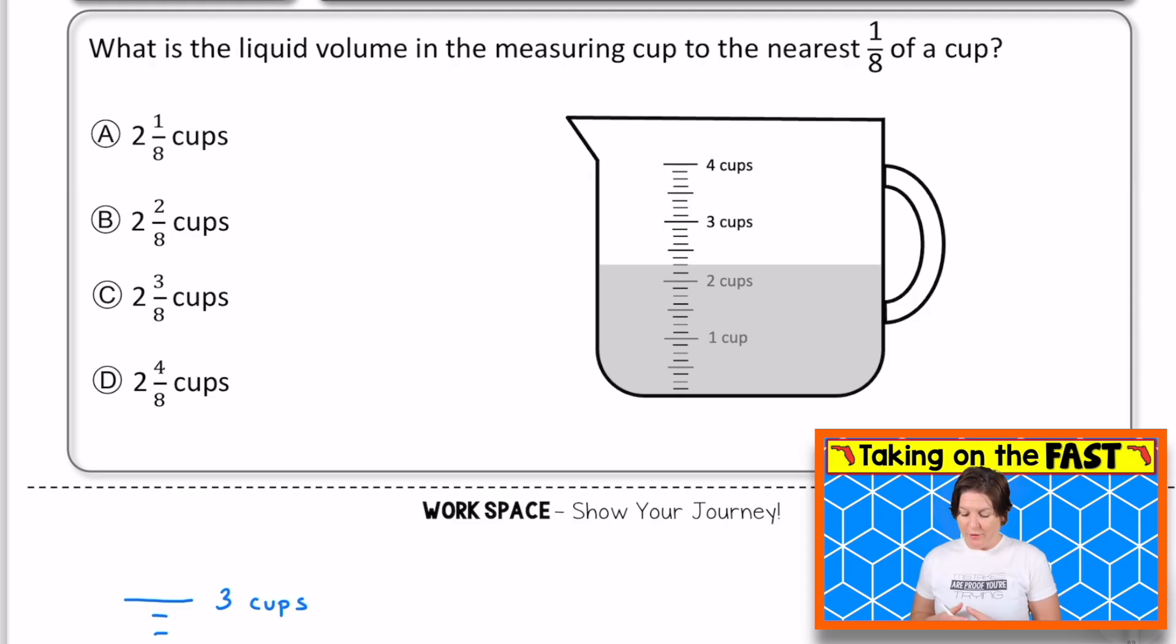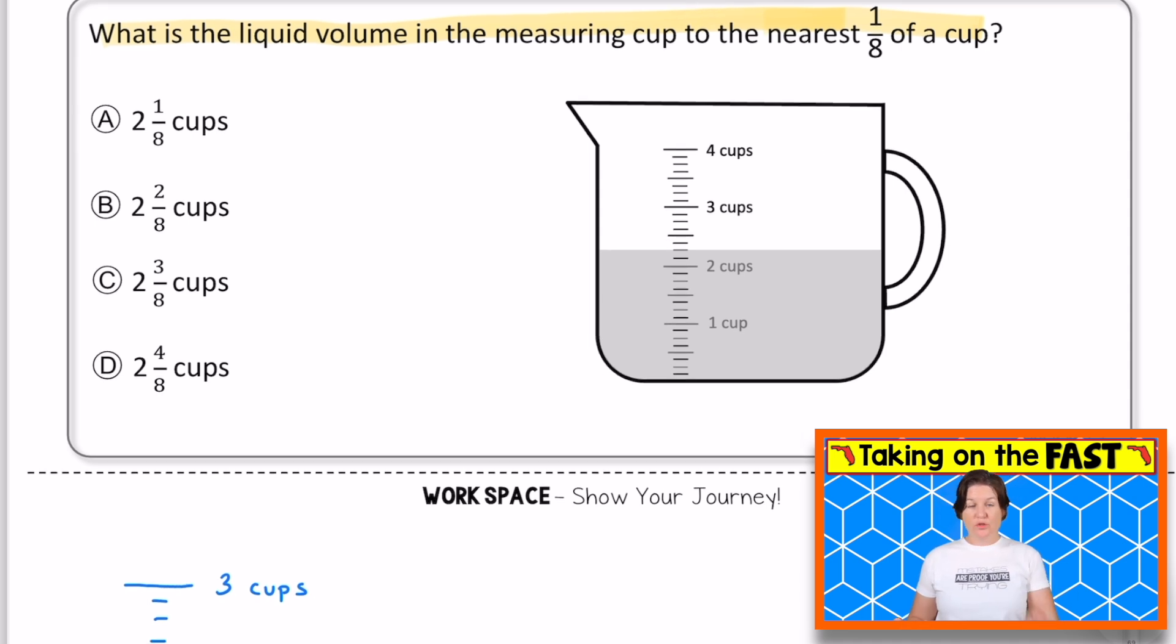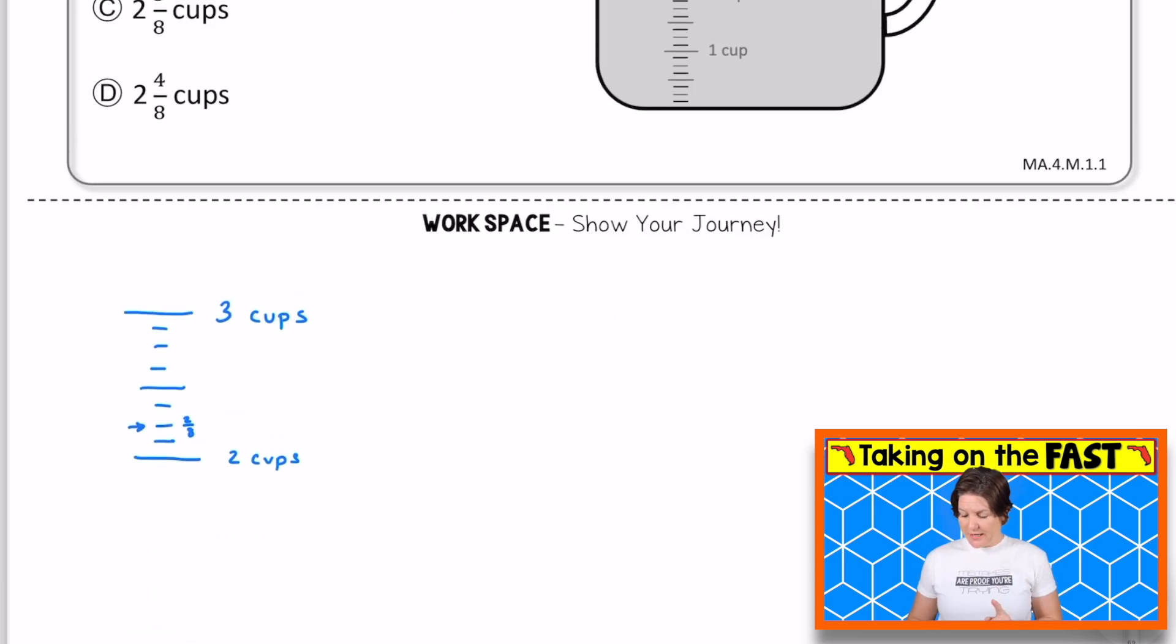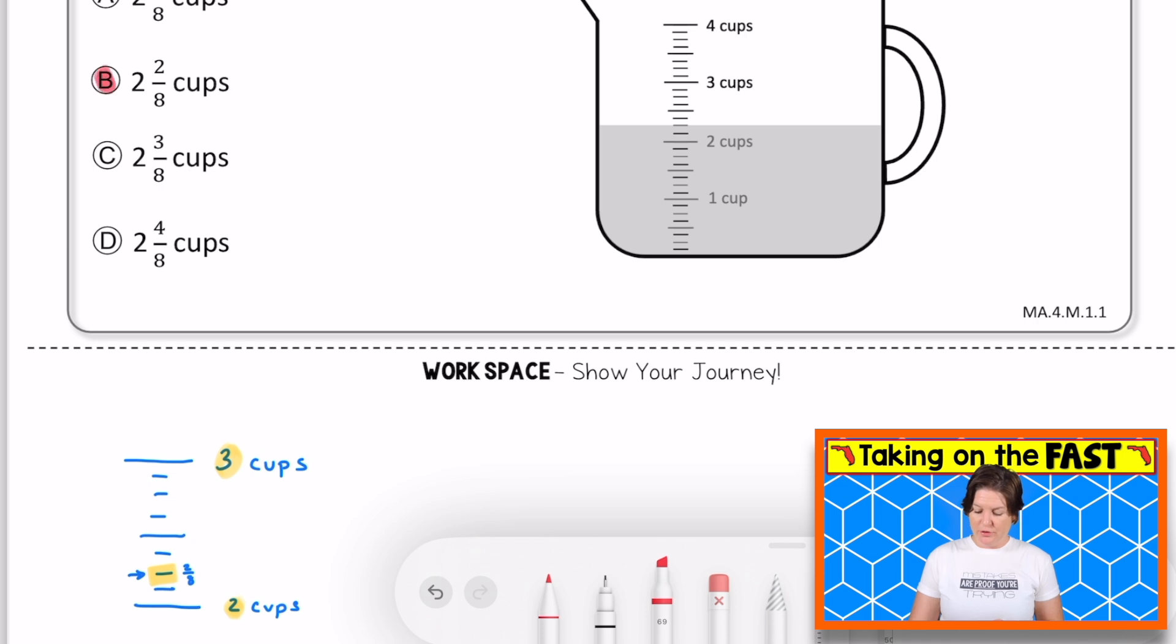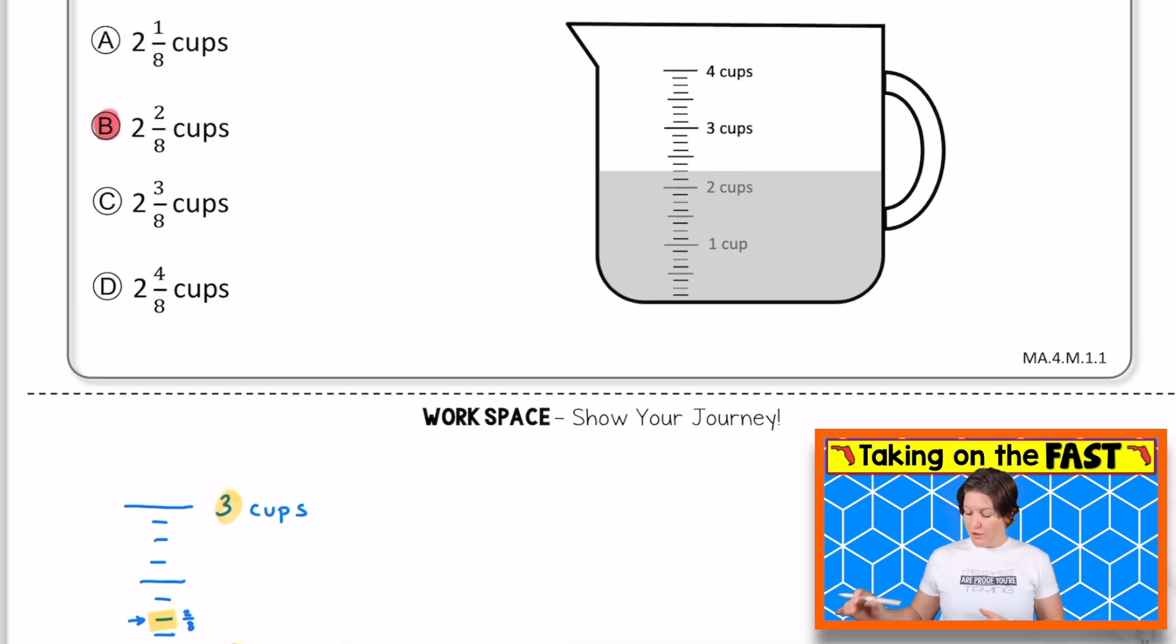Here is our multiple choice problem of the day, and it says, what is the liquid volume in the measuring cup to the nearest eighth of a cup? So we have to select one. Is it two and one eighth, two and two eighths cups, two and three eighths cups, or two and four eighths cups? Because this is a multiple choice question, only one of them is going to be correct. And I noticed that when I took it, it was on the second little line right there between two cups and three cups, which would make it two and two eighths. So our correct answer is B, two and two eighths of a cup. You would click that one and move on to your next question. But before you move on to the next question, pause to jot down your notes and press play to continue.